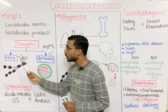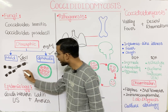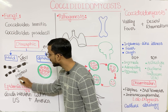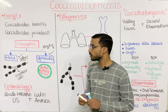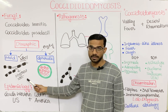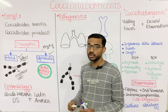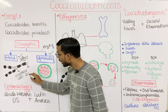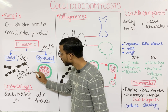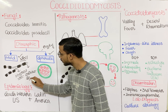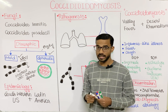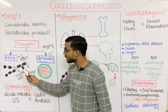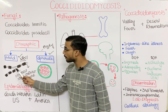In the mold form, you will see the hyphae. Within the hyphae, there is the presence of arthrospores, also called arthroconidia. You will also see the arthrospore empty cells alternating with the arthrospores.